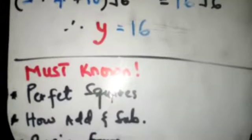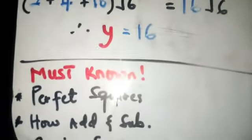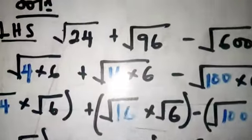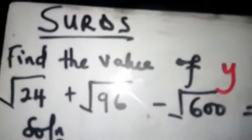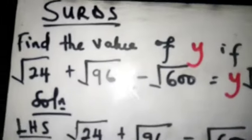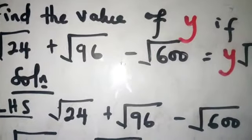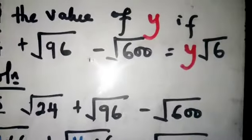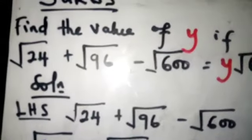In this video we are going to talk about how to add and subtract surds using a pure past question. The question says: find the value of Y if root 24 plus root 96 minus root 600 is equal to Y root 6. So how do you solve this type of problem?